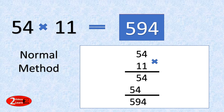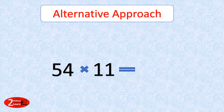As you could see, it took a little bit of time, and as the number increases and the multiplication involves a larger number, the time would eventually increase. So let's discuss the alternative approach now. I'm here with the same example — 54 by 11.